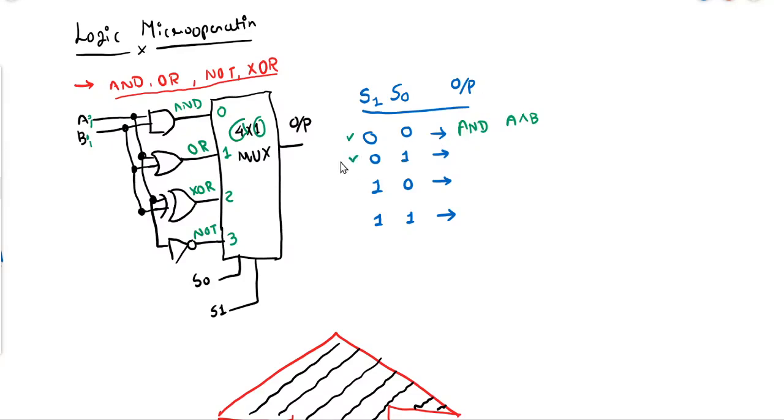If we give 01, then input number one will be selected. So A1 and B1, or A0 and B0. Irrespective of it, it will perform the OR operation of bits of register A and bits of register B. So here OR operation will be performed: A OR B.